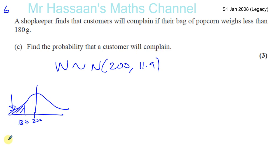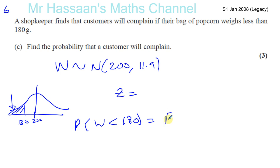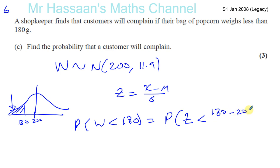Let's find the Z value for this. We've got to find the probability that the weight of the bag of popcorn is less than 180, which in the standardized version is the probability that Z is less than a value. Remember Z equals X minus mu over sigma. So if you standardize 180, you have 180 minus 200, which is going to be negative — below the standardized mean — over the standard deviation, which was 11.9. Let's use 11.88 for a more accurate version.